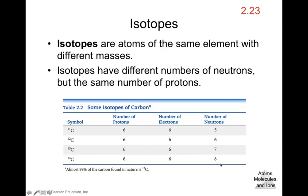To find neutrons, subtract the atomic number from the mass number. For carbon-11: 11 − 6 = 5 neutrons. For carbon-12: 12 − 6 = 6 neutrons. For carbon-13: 13 − 6 = 7 neutrons. For carbon-14: 14 − 6 = 8 neutrons. So the number of protons must remain the same for isotopes of the same element, while the number of neutrons differs.